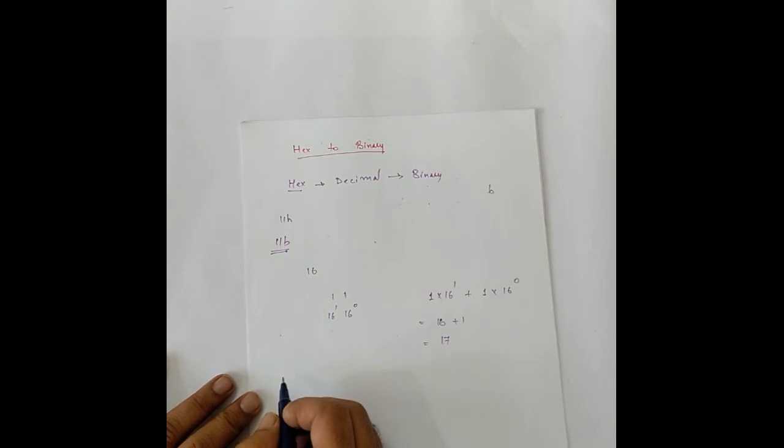Let's try another example. Let's take 17. 17 hex. So, it becomes 1 into 16 to the power 1 plus 7 into 16 to the power 0. That makes it 16 plus 7 equals to 23.